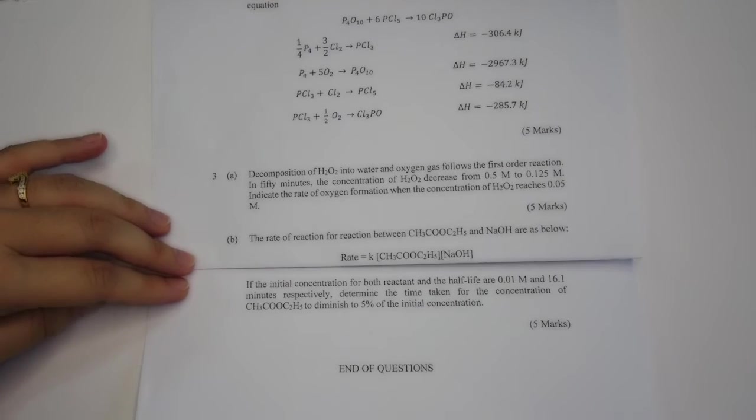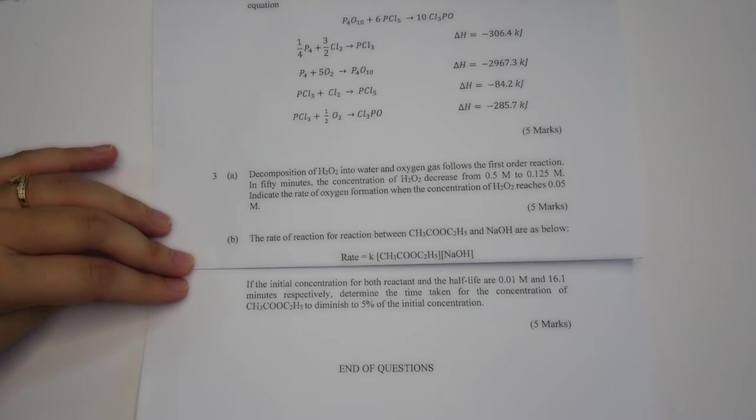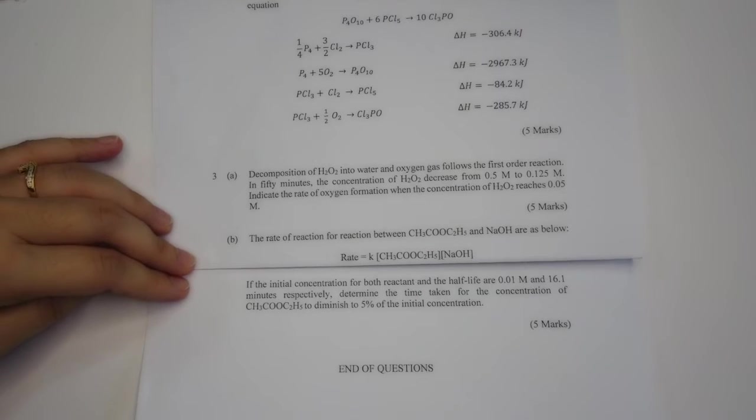Moving on to the final question for your test: the rate of reaction for the reaction between CH3-COO-C2-H5 and NaOH are as below.